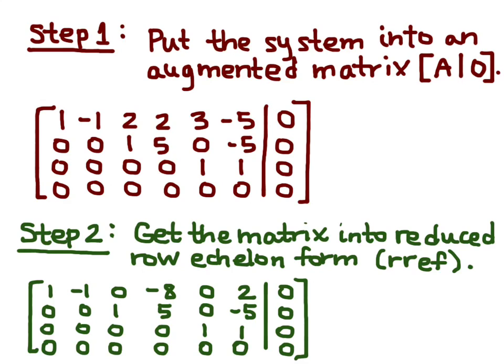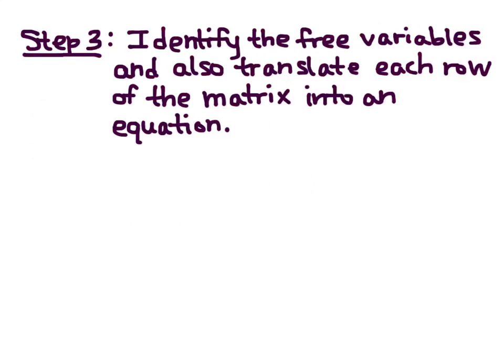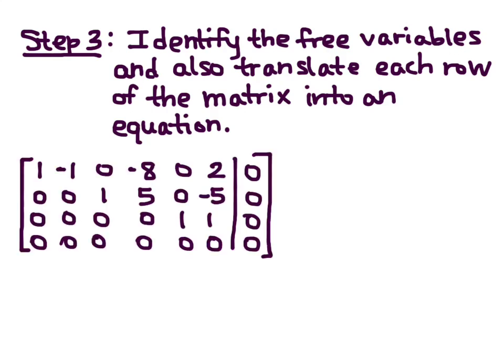Now our next step, step three, is to identify the free variables and also translate each row of the matrix into an equation. So, here's my matrix in reduced row echelon form. Remember that each column is associated with one variable, so I have X1, X2, all the way through X6, each associated with a column.